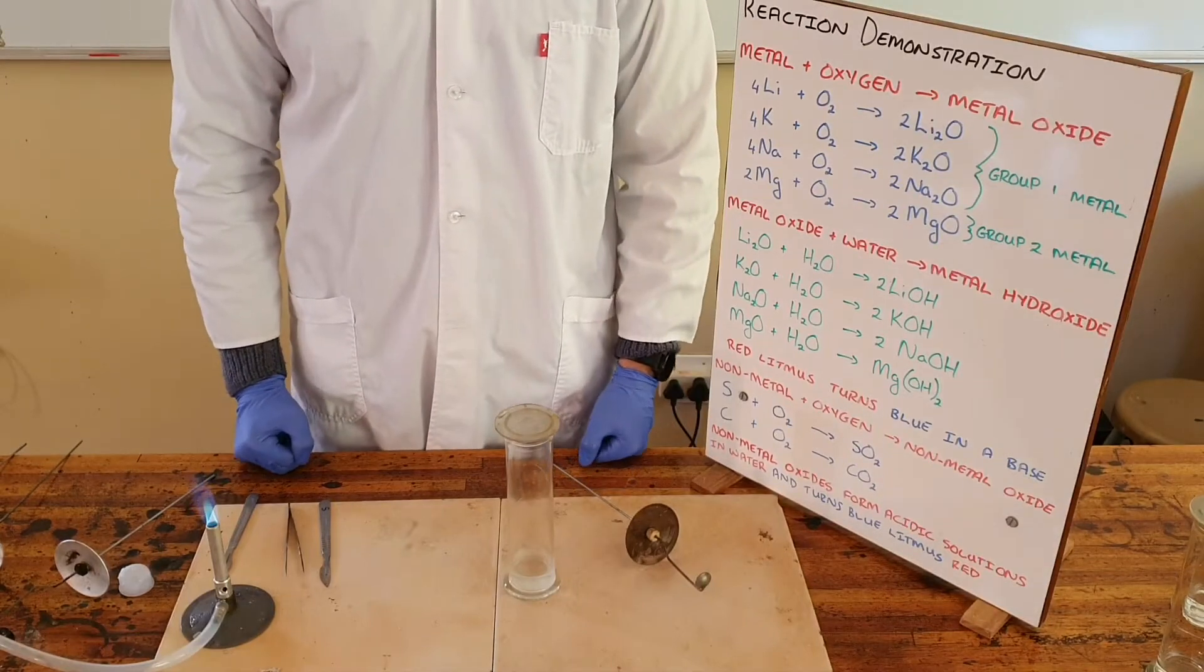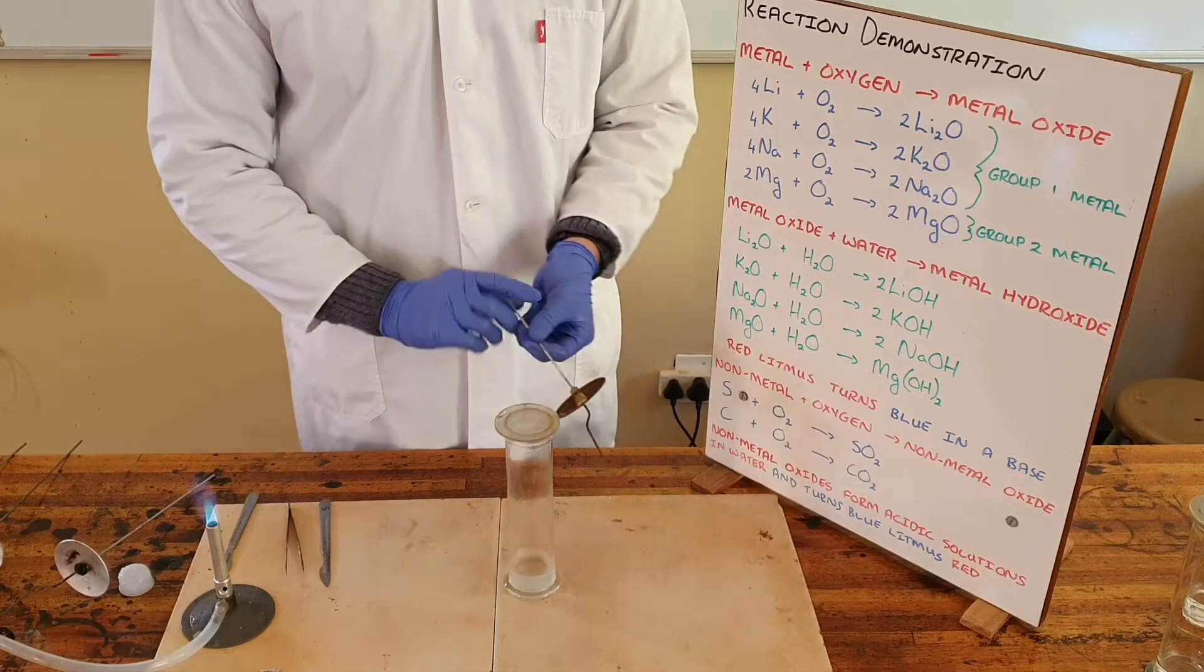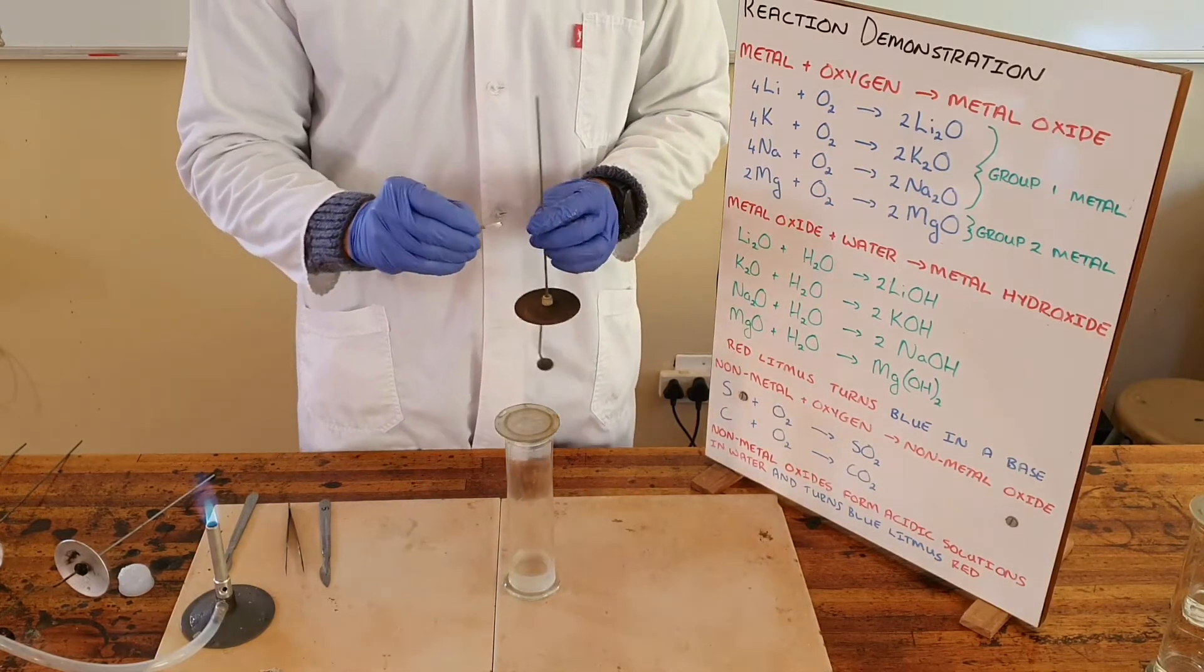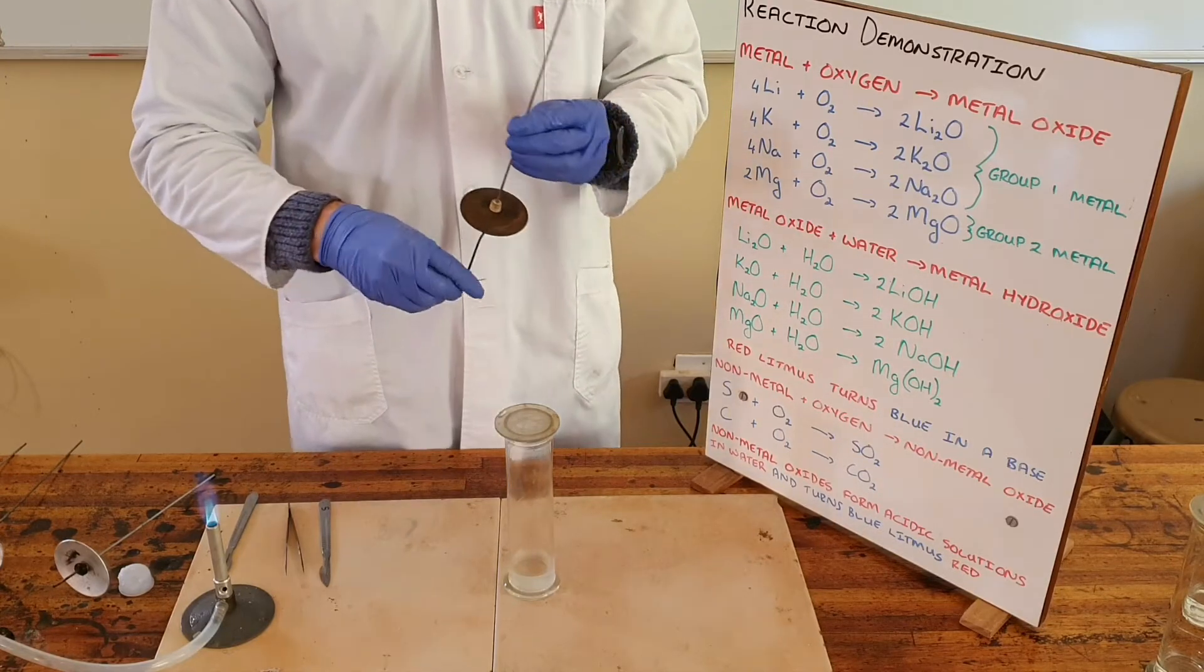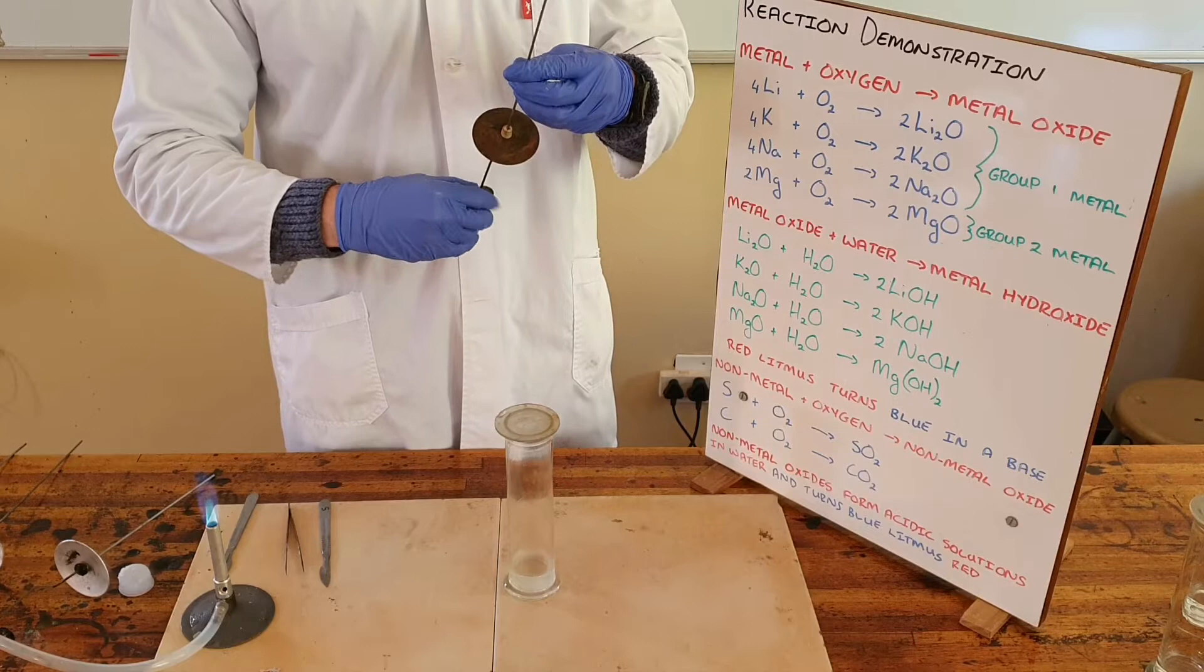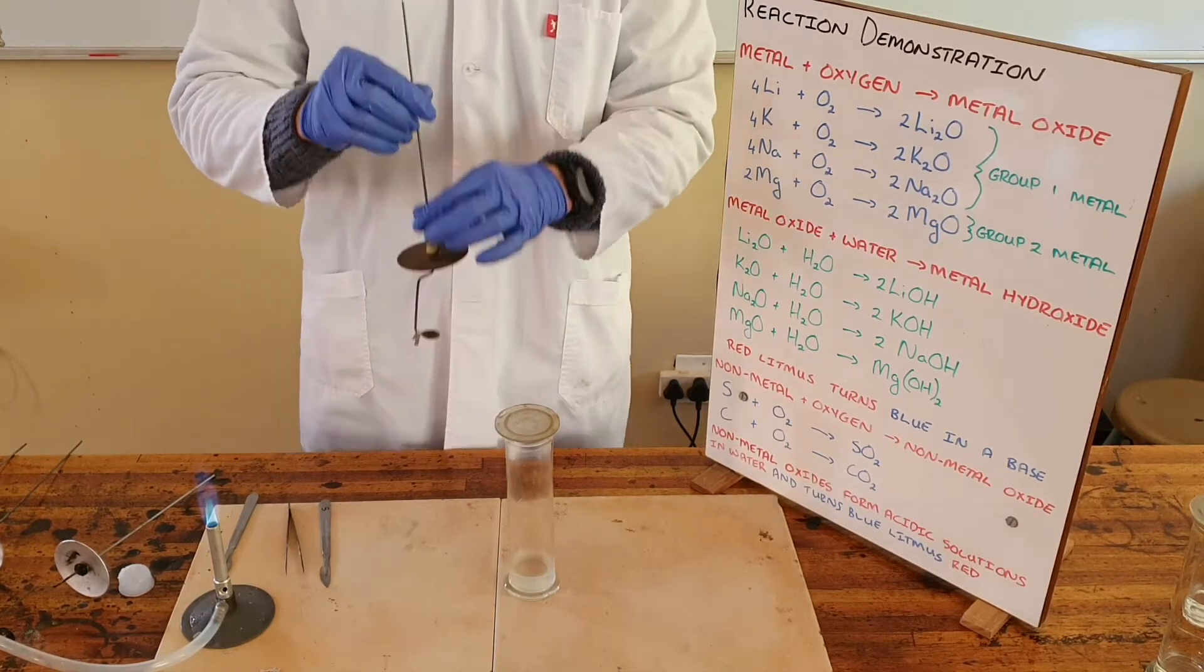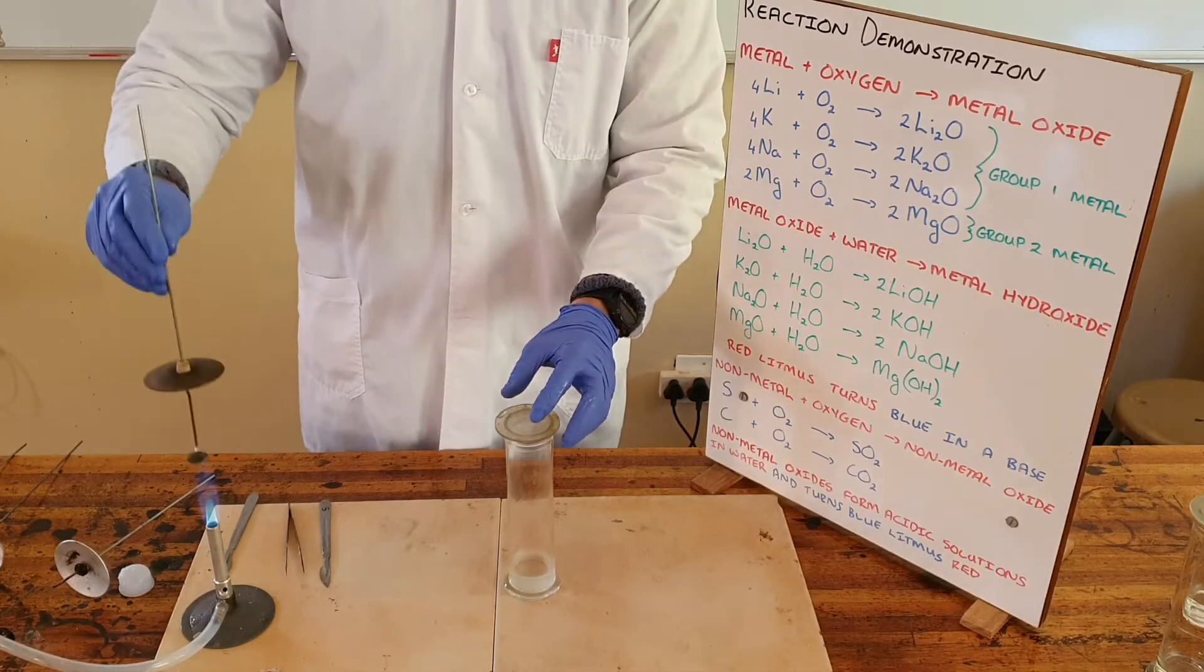A demonstration of a group 2 metal burning in oxygen can be done with magnesium. The magnesium is in the form of a ribbon that can be tied around the deflagrating spoon before it is ignited and then placed into the gas jar containing oxygen.